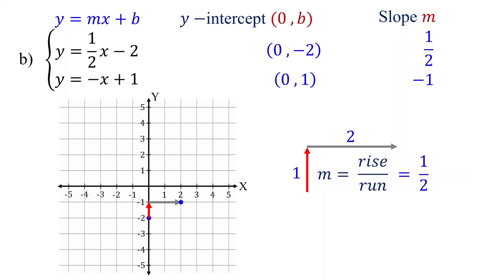Let's plot one more point. Starting from this point, again go up 1 unit and to the right 2 units, then plot this as the third point. The advantage of the slope-intercept form is that we can easily plot more points and make our graph more accurate. Next, connect the points with a straight line. This represents the line of the first equation.